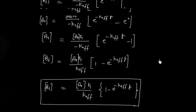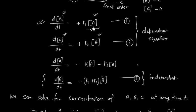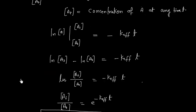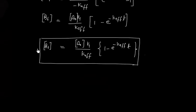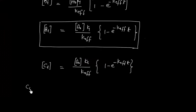Now we solve equation 2 for the concentration of C. Equations 1 and 2 are very similar — the only difference is that in place of K1 we have K2, and in place of B we have C. So by analogy, the concentration of C at any time T is: C_T equals (A₀ · K2 / K_effective) times (1 minus e to the power of minus K_effective times T).